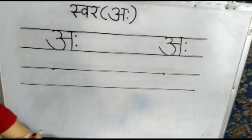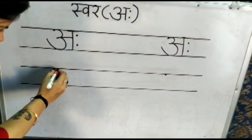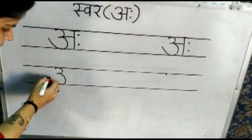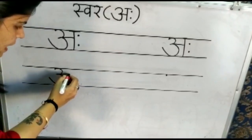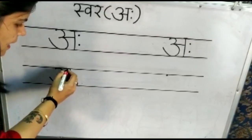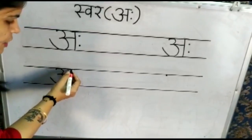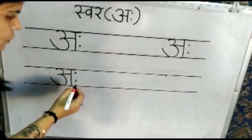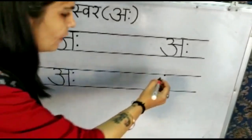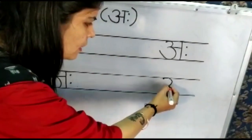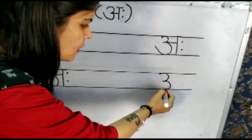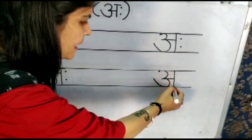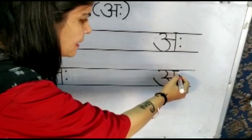Again: one curve, another curve, extend it up, sleeping line, standing line, sleeping line — the sleeping line should be at the top of the standing line — then make two dots. Again: one curve, another curve, extend it up, sleeping line, standing line, sleeping line, and make two dots.